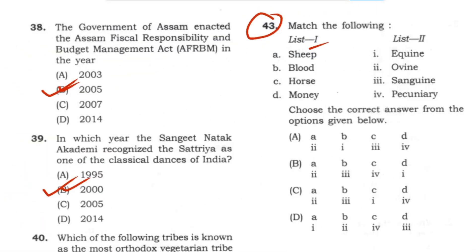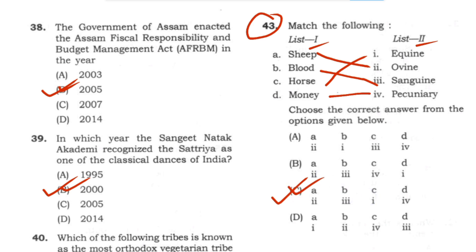Question 43: Match the following — List 1 and List 2. Sheep: 2, Blood: 3, Horse: 1, Queen: 4. Answer: A2, B3, C1, D4, option C.